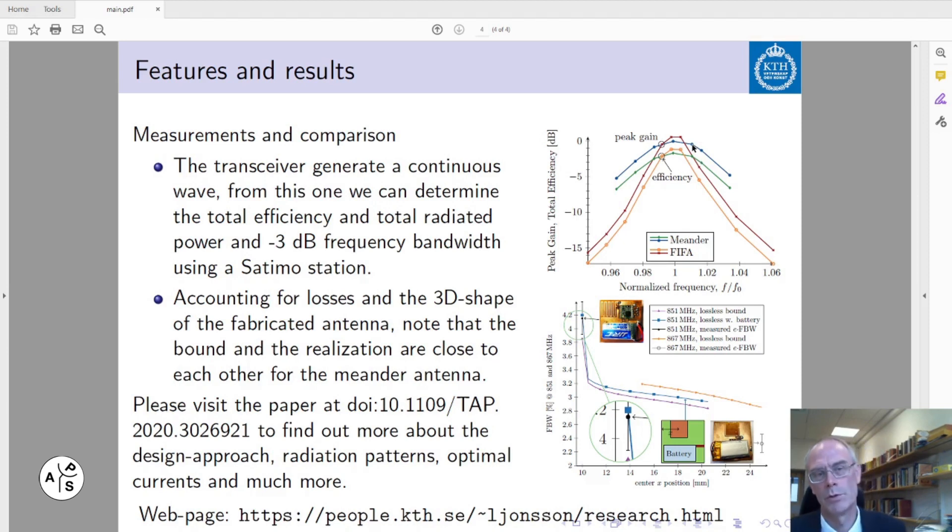Once we have both simulation and measurements, it's interesting to compare these results to see how close the realized antenna is to the optimal bound. This is the efficiency corrected result. The black dot represents the measurement of this antenna and the blue dot represents the bound. We can see that the measurement is very close to the bound.